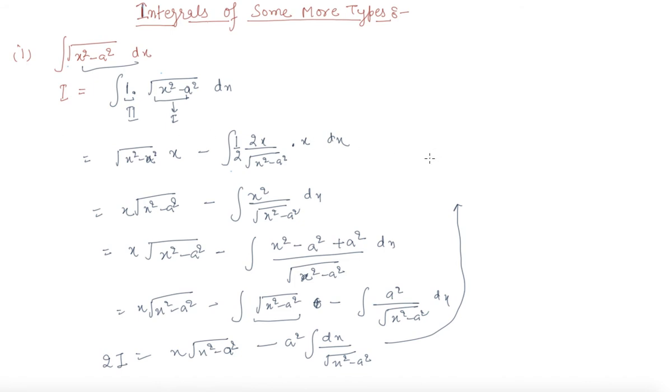Now can I write this integral as log of which we studied earlier. The i becomes x by 2 root x square minus a square minus a square by 2 log x plus root x square minus a square because students in earlier classes we have studied this formula.